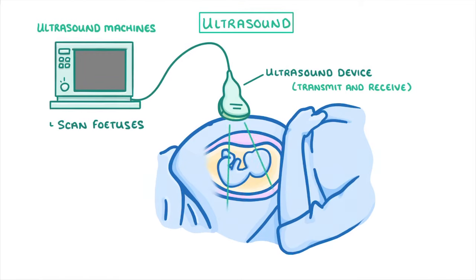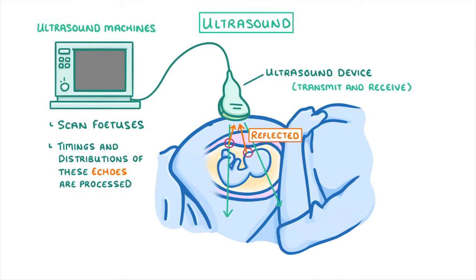Every time the waves pass from one medium to another, like here, between tissue and the fluid that surrounds the fetus, or here, between the fluid and the fetus itself, some of the waves are reflected back to the device. And the timings and distributions of these echoes are then processed by a computer to produce a live image of the fetus, which can be used to check if it's healthy.